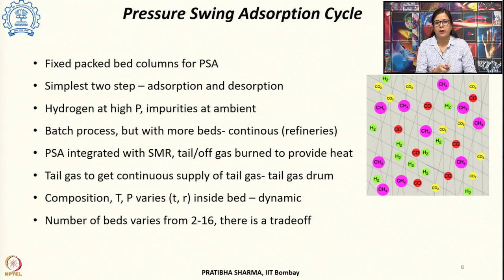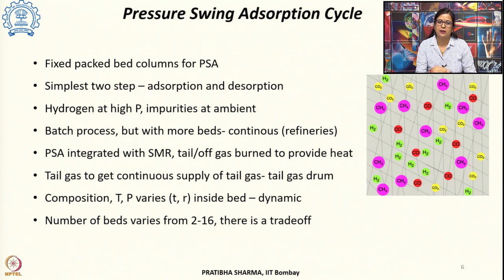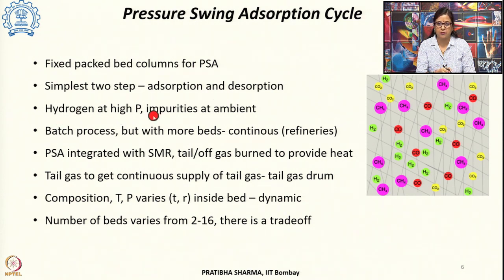Once the bed gets saturated with the contaminants, the second step is desorption to get the impurities out of the bed, and then the bed gets ready for the next cycle. In this 2-step PSA cycle, hydrogen is obtained at higher pressure while the impurities are obtained at ambient or close to ambient pressure. As we can see, this is essentially a batch process.